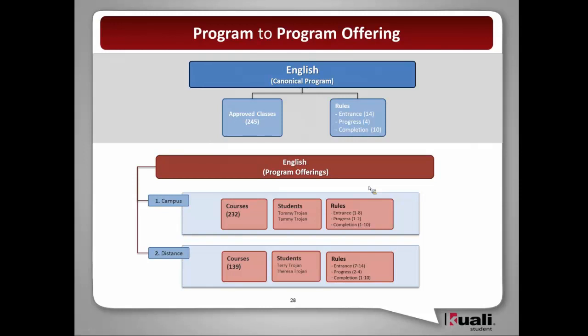There is a change at the offering level. The second version that the English department is offering is done as distance learning, and it is going to use 139 of the 245 approved courses, because those are the only ones that have been approved to be offered through a distance learning method.